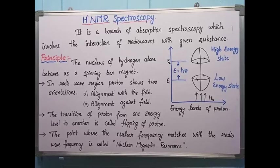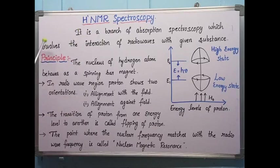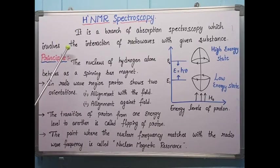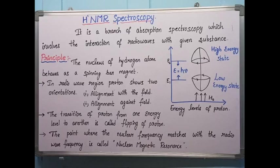In today's video I'll introduce NMR spectroscopy, that is nuclear magnetic resonance spectroscopy. It is a branch of absorption spectroscopy which involves the interaction of radio waves with a given substance. The substance undergoes interaction with radio waves in the electromagnetic region and produces a spectrum, which is useful for studying the structure of a compound.